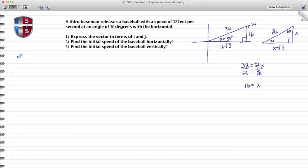The way that you show the magnitude in proper notation is the name of the vector with two vertical bars on each side, so we know that ||W|| = 32 based on the problem. They also gave us θ, which is the angle at which the baseball was released, and that's 30 degrees.